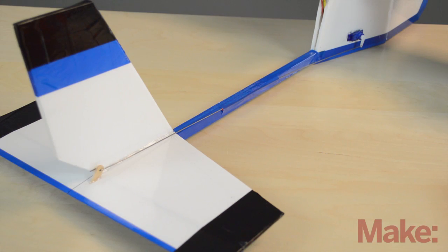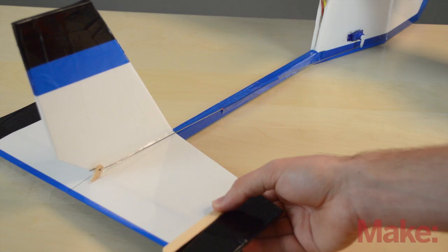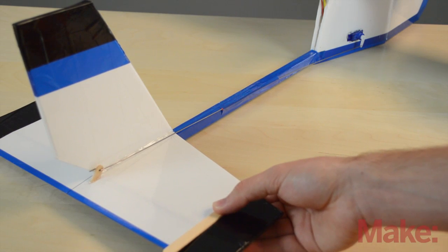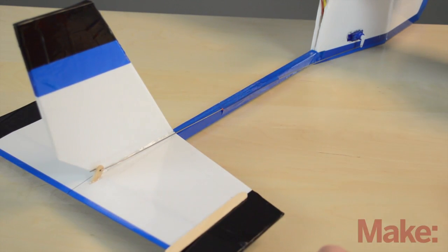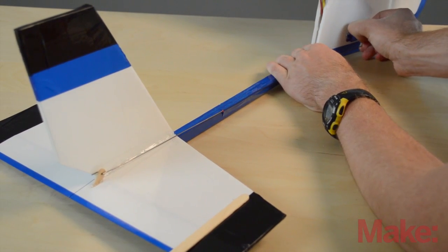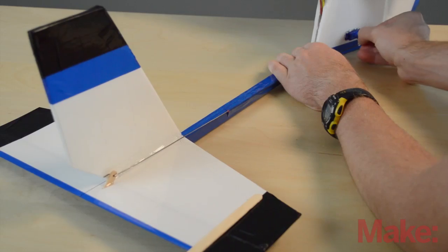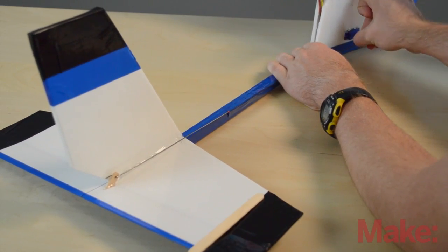Using the elevator as an example, we can take a popsicle stick as a reference of how flat it is and we can put it over the control surface and we see that it's pointed down a little bit. So I'm going to take off the servo arm and put it back on, just change where it is.